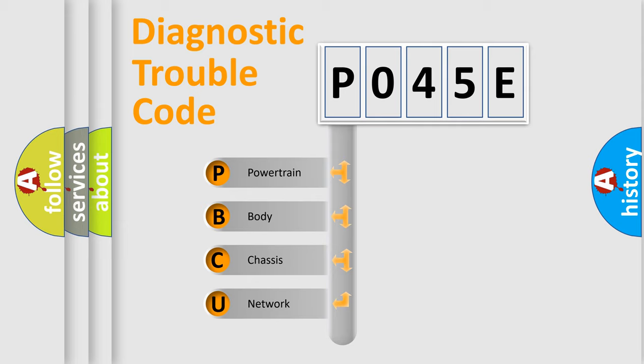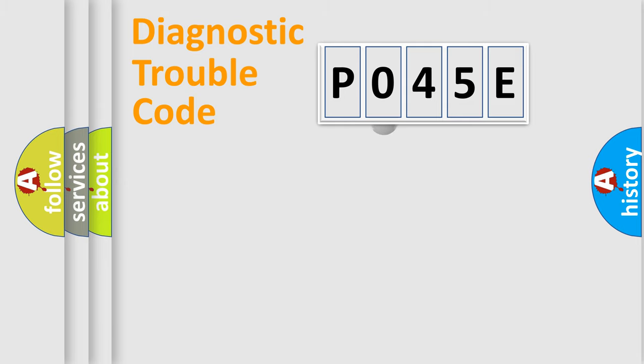We divide the electric system of automobile into four basic units: Powertrain, Body, Chassis, and Network. This distribution is defined in the first character code.